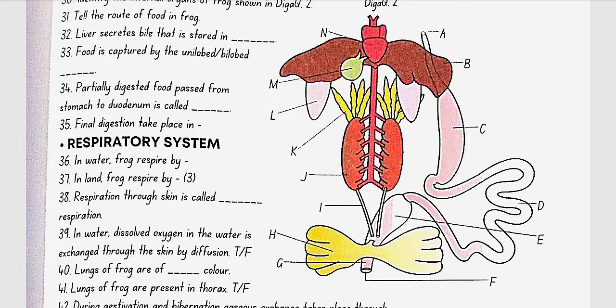Tell the route of food in frog. So, mouth, buccal cavity, pharynx, esophagus, stomach, intestine, rectum, then cloaca. Liver secretes bile that is stored in gallbladder. Food is captured by the bilobed tongue.